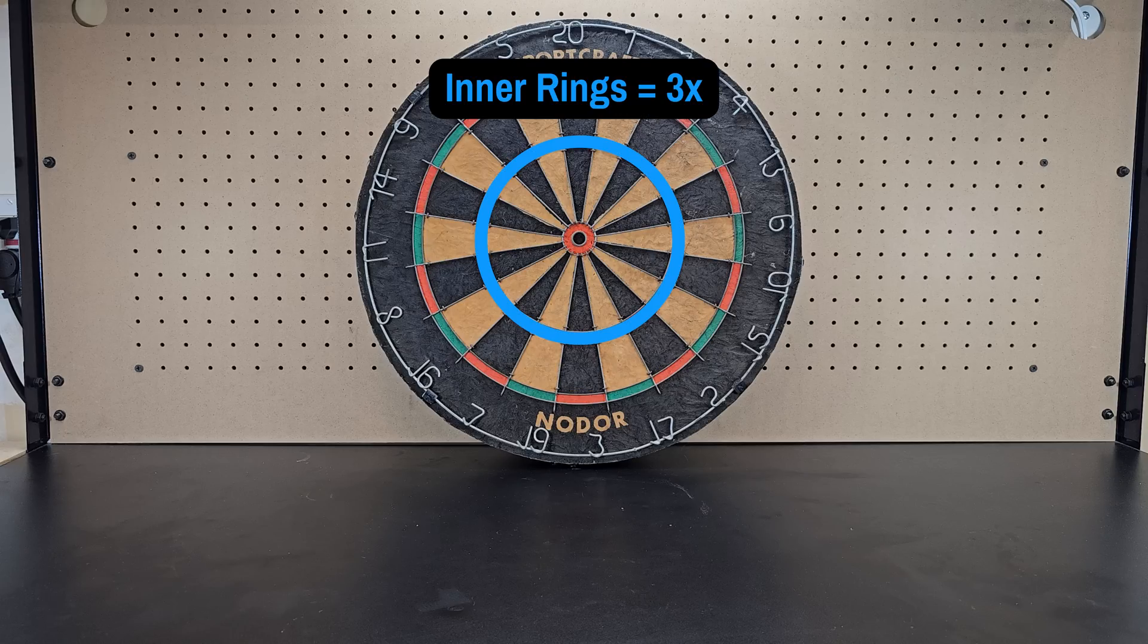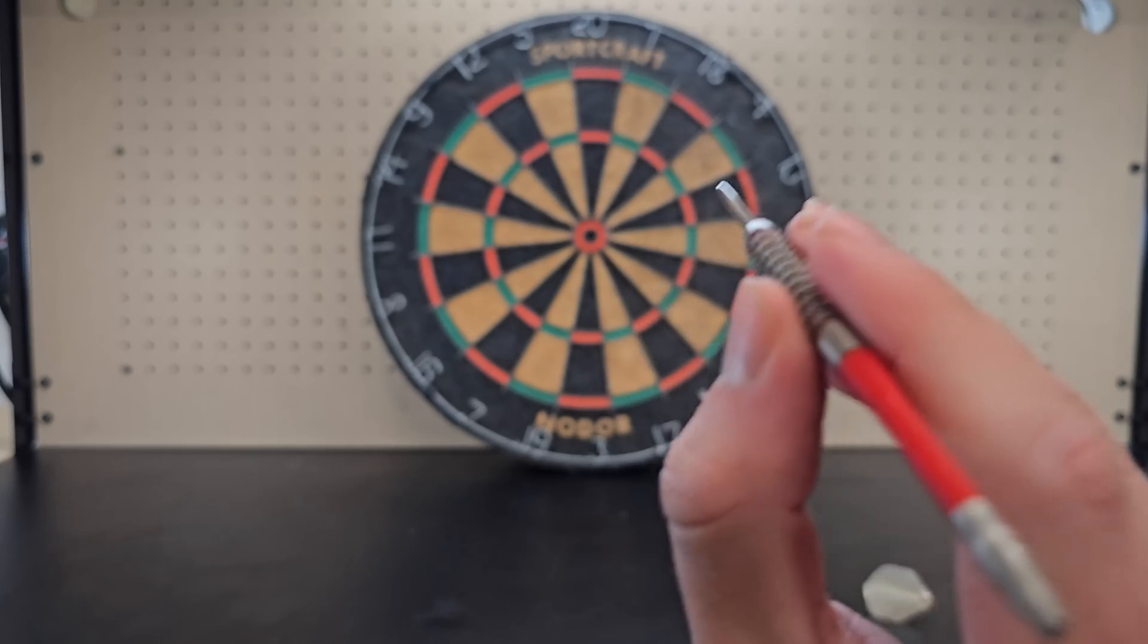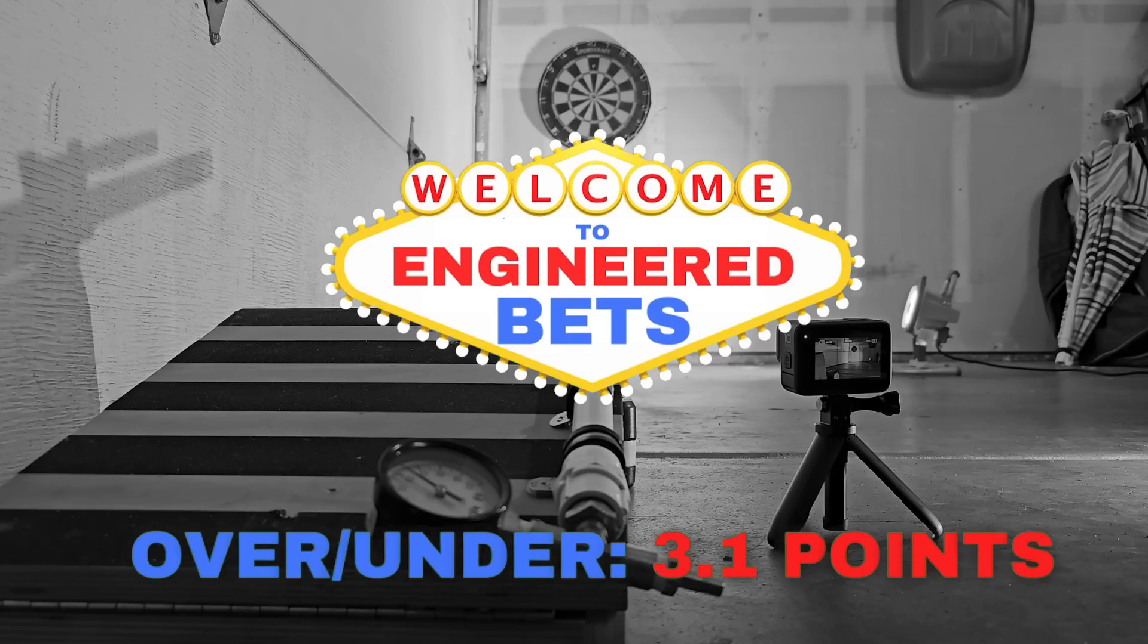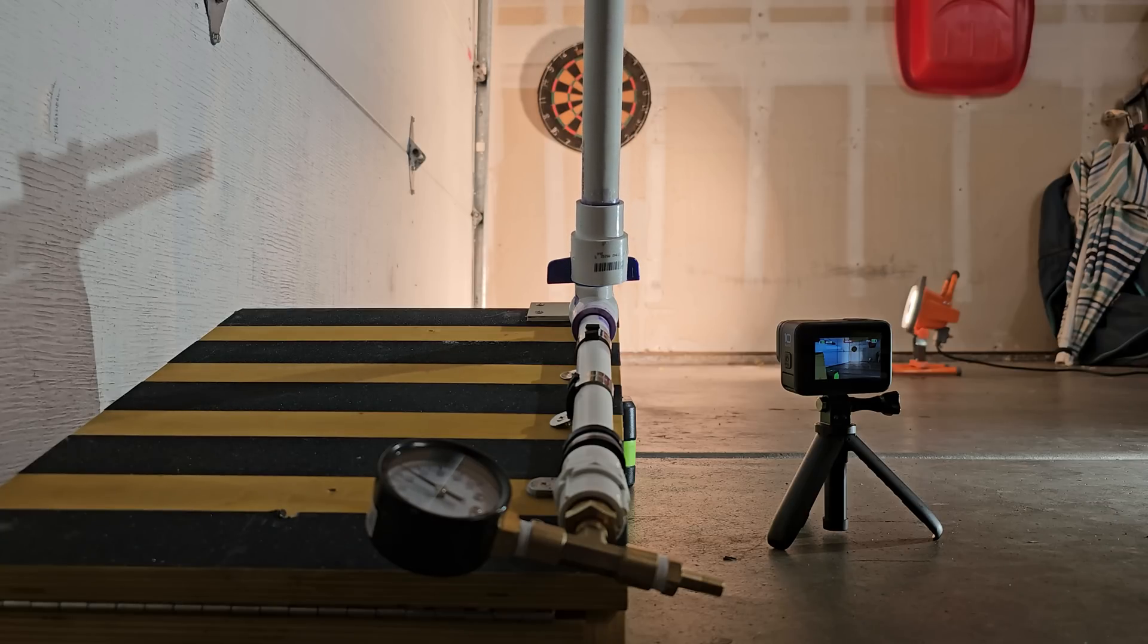factoring in the odds of the score being doubled, tripled, flying off course, and also the dart not sticking to the board, which would result in a score of 0. Last chance to lock in your guess in the comments, and I'd love to hear your thought process behind it. And now it's time to see what actually happened.